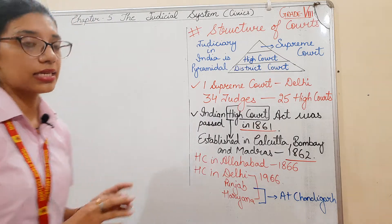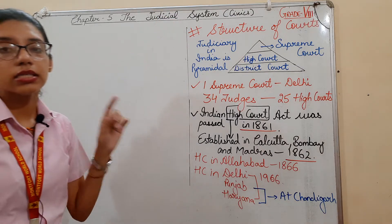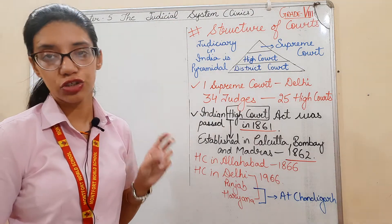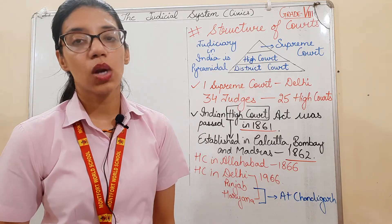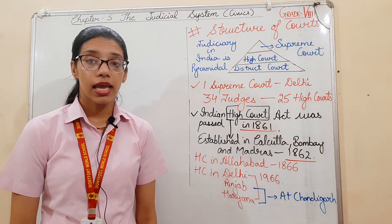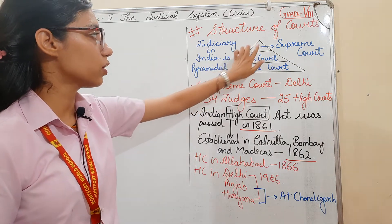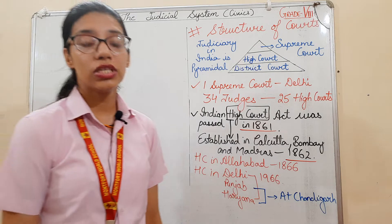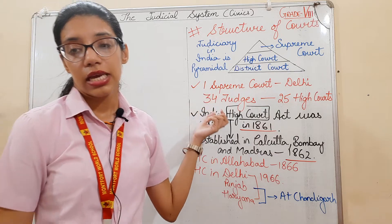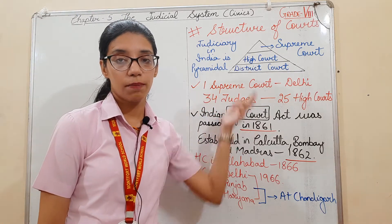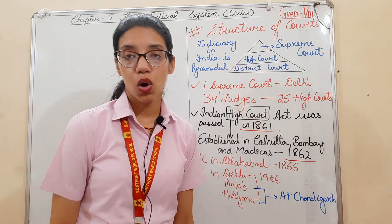The structure of courts in India: the Constitution of India provides a single integrated judicial system. Unlike other federal countries, India does not have separate state courts. India has a pyramidal structure of courts — the structure starts at the top with the Supreme Court, below that is the High Court, and below the High Court are the district courts or lower courts.